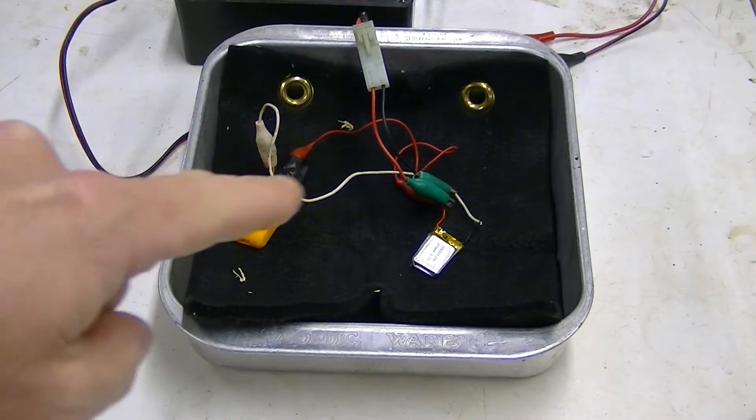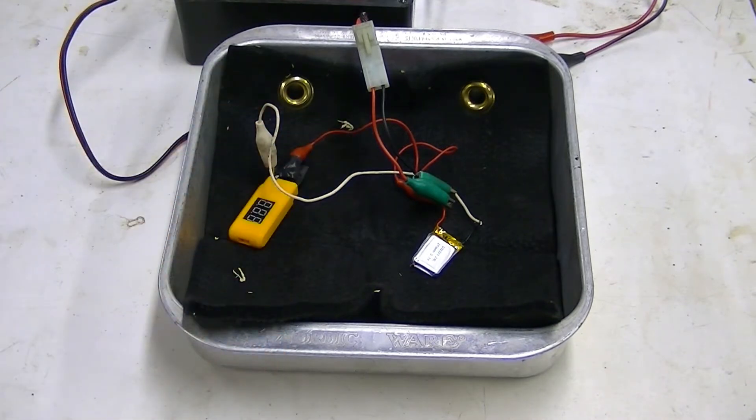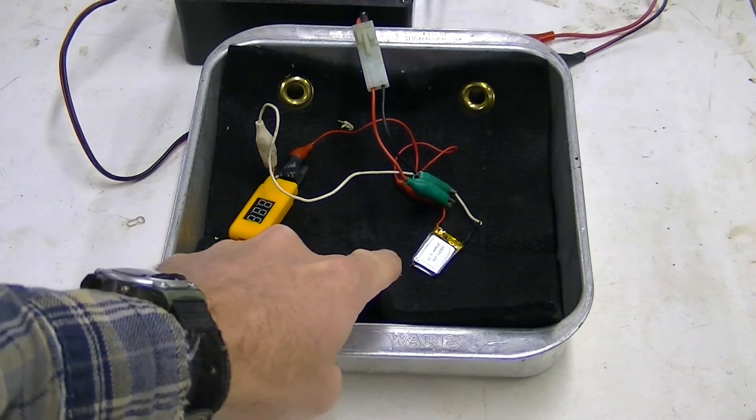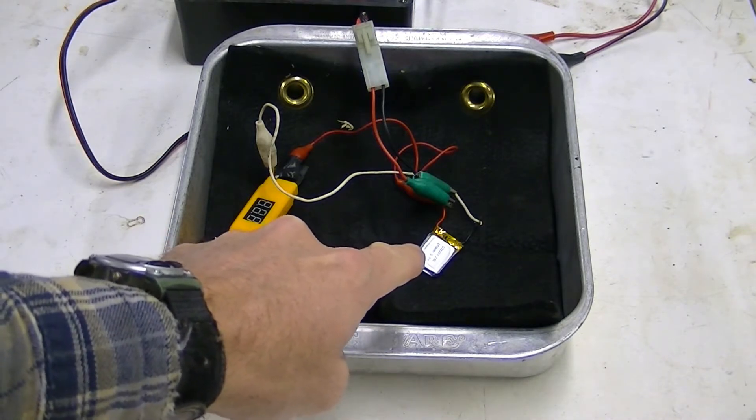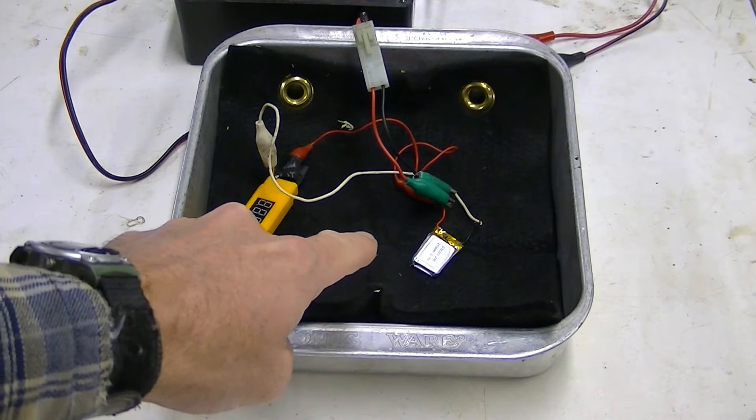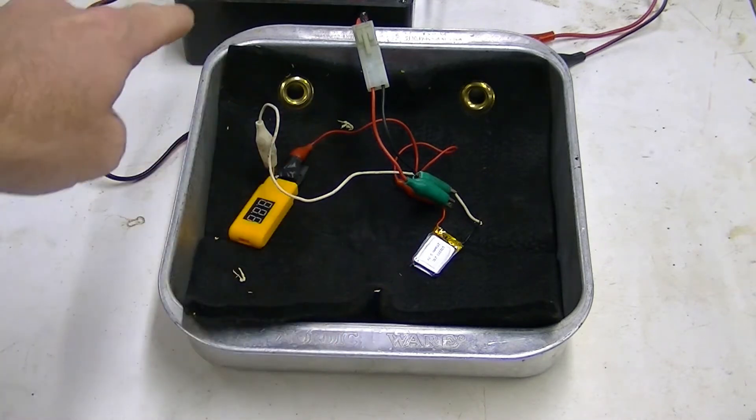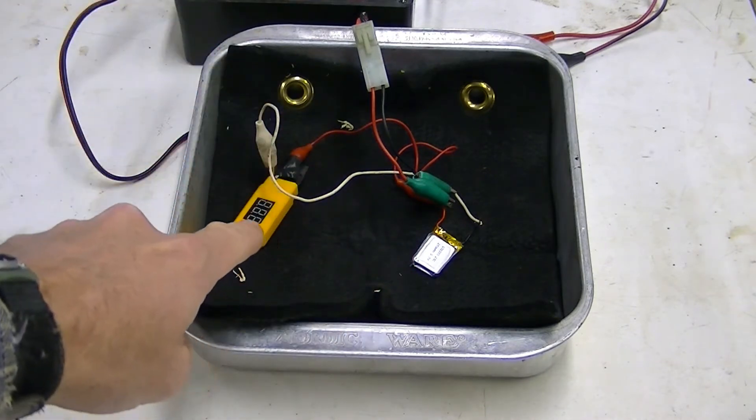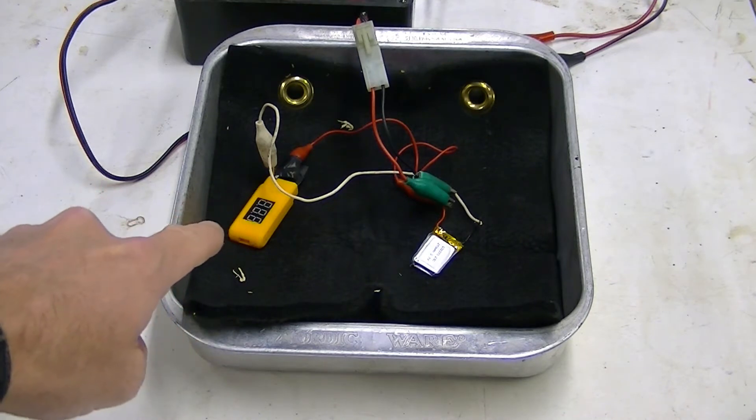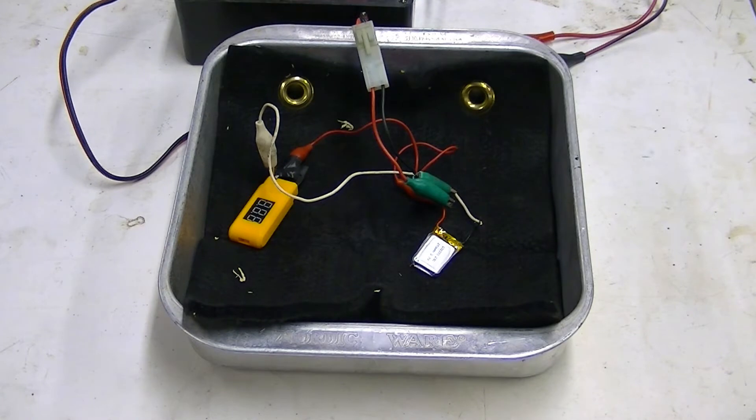Now, when I plug it in, it should beep. And then we'll set the charge rate, this is a 200 milliamp hour battery, we'll set the charge rate to .2 amps on a fast charge and monitor the voltage coming out of the cell checker. If everything goes alright, we should be okay.